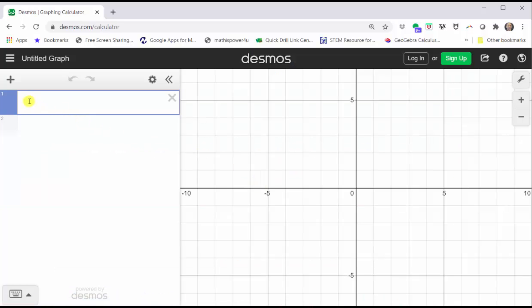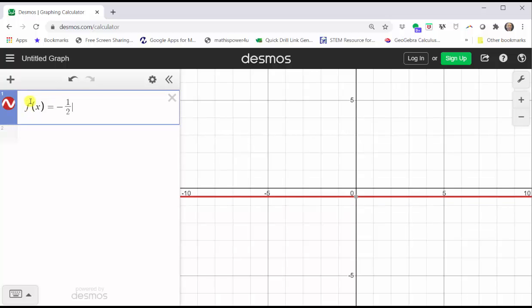We enter the function in cell one. We can use y or f(x). I will use f(x). We have f(x) equals negative 1 divided by 2, tab or right arrow.